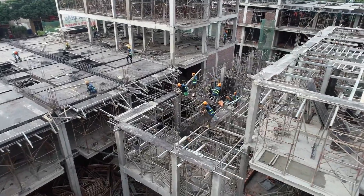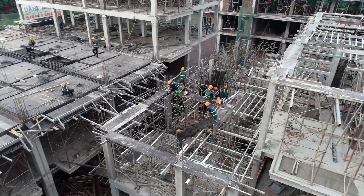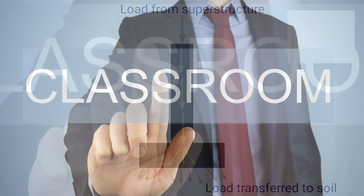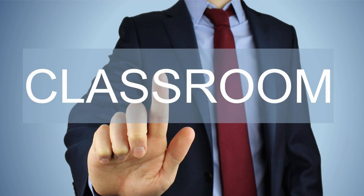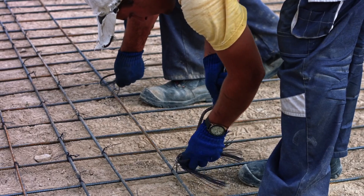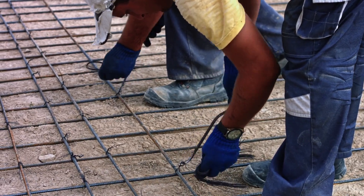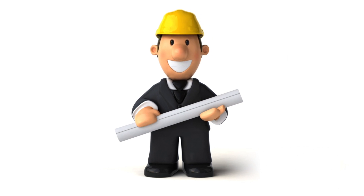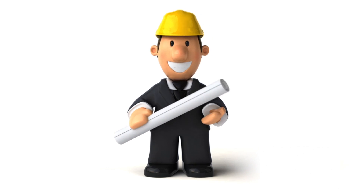Columns play an important role in a building structure. The main function of them is to transfer the loads from slabs and beams to the foundation and finally to the soil underneath. This video is going to be very helpful to students who want to learn how to calculate the quantity of steel required for a column and how to prepare the bar bending schedule of a column. Let's illustrate this whole procedure with the help of an example.